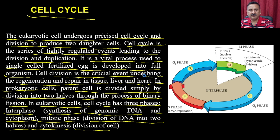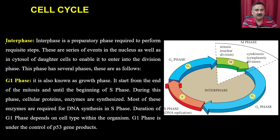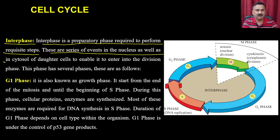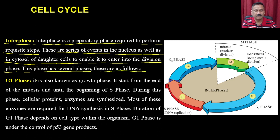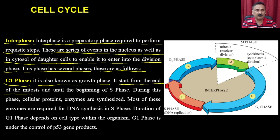The interphase is a preparatory phase required to perform the requisite steps — a series of events in the nucleus and cytoplasm to enable the cell to enter the division phase. Within the interphase, the first sub-phase is G1, also known as the growth phase. It starts from the end of mitosis until the beginning of the S phase.